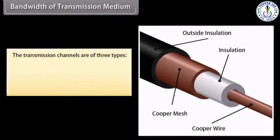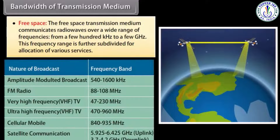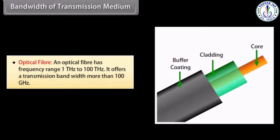Bandwidth of transmission medium: transmission channels are of three types. Wires — the widely used wire medium is a coaxial cable; the bandwidth of coaxial cables is about 750 MHz and such cables are usually operated below 18 GHz. Free space — communicates radio waves over a wide range of frequencies from a few hundred kHz to a few GHz. Optical fiber — has a frequency range of 1 THz to 100 THz and offers a transmission bandwidth of more than 100 GHz.